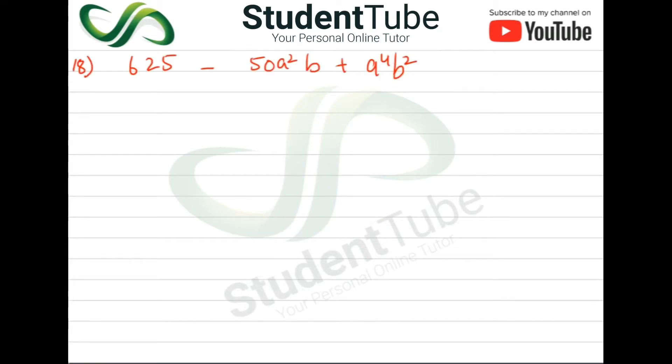Today's question is question 18: 625 minus 50A²B plus A⁴B². So here we will write it from one way: 625 minus 50A²B plus A⁴B².